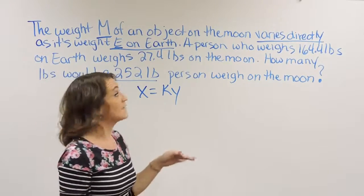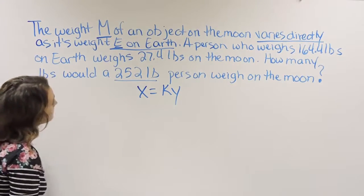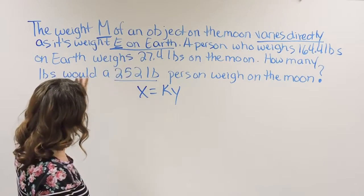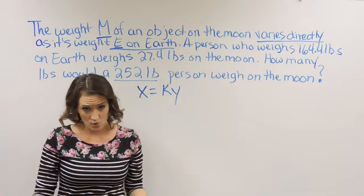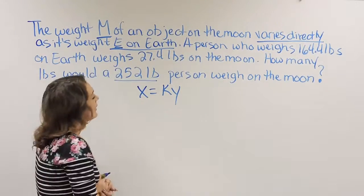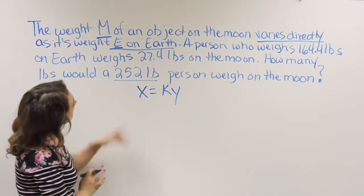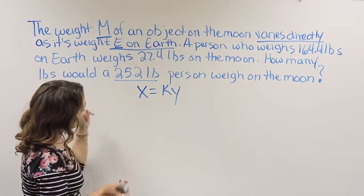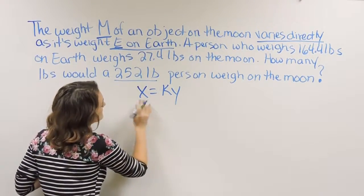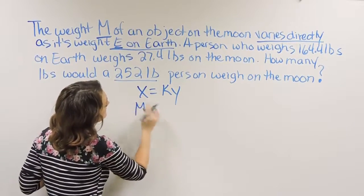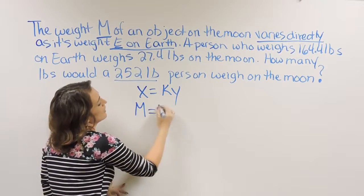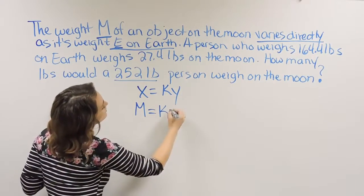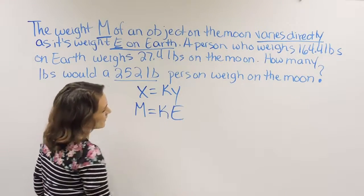For this particular problem, we're going to plug in components dealing with weight on Earth versus weight on the moon. The problem says the weight M on the moon varies directly as the weight E on Earth. So our X is going to be M, weight on the moon, and that varies directly with E, weight on Earth.